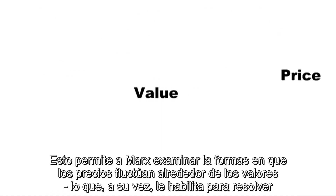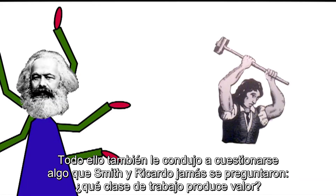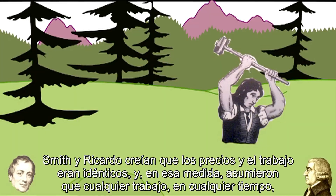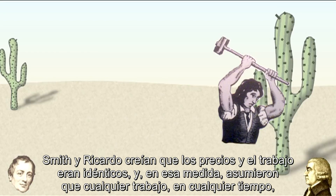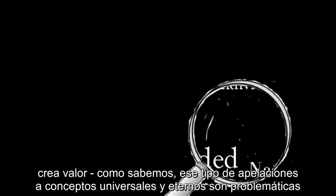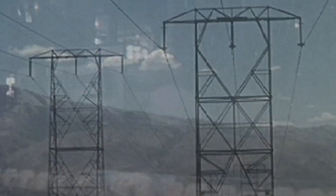This allows Marx to examine the ways in which prices fluctuate around values, which allows him to solve some theoretical problems that eluded his predecessors. It also leads him to ask an important question that Smith and Ricardo had never asked: what type of labor produces value? Because Smith and Ricardo saw labor and price as identical, they assumed all labor, in all times, created value. It is only a specific type of labor that produces value — labor for exchange. Thus, only a specific type of society, in which there is a regular, predictable disciplining of labor to the needs of market exchange, can be a society ruled by the law of value.